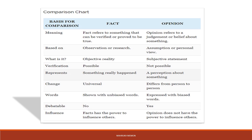Facts are shown with unbiased words, while opinions are expressed with biased words because they are based on perception. Facts are not debatable — if a fact is true, it is true for everyone and we cannot debate on it. When talking about opinions, if everyone has a different opinion we can debate which opinion has higher value or which is more authentic. We can debate personal perceptions, but facts would be true for everyone.